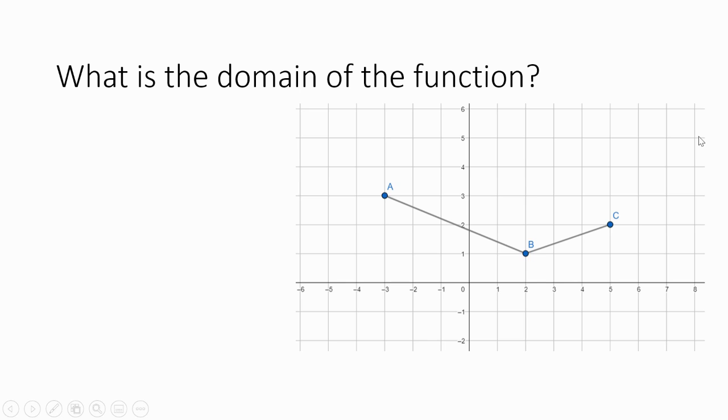Here's a graph of a function, and you see point A and point C. There's no arrows there, so those points end there—they don't continue in both directions forever. What we're going to do is look at this and go okay, what x's are we using?